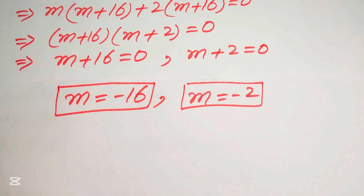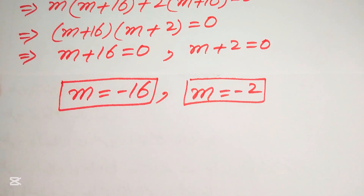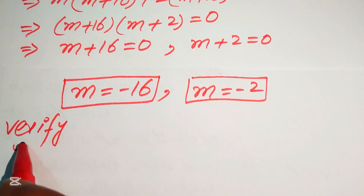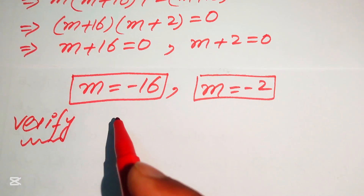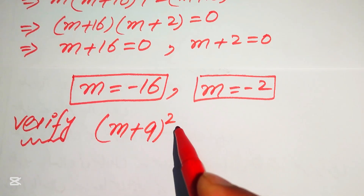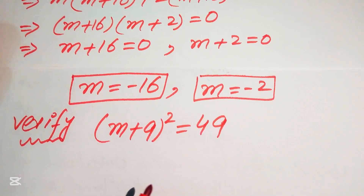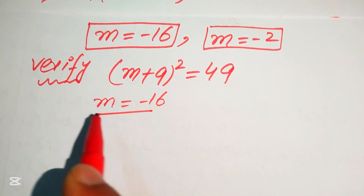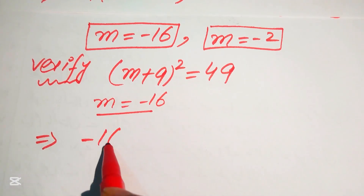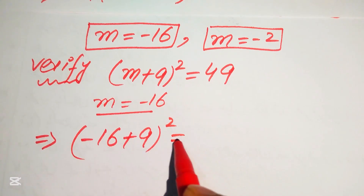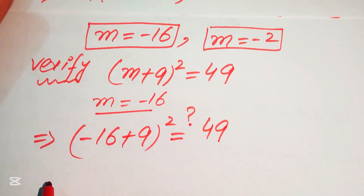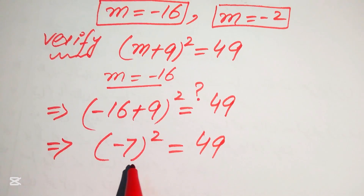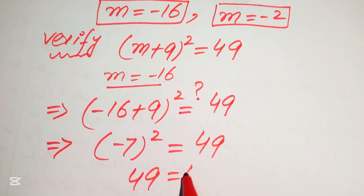Please comment which method you liked, or share any other method in the comment section. Now we verify these results. Copying the original equation: (m + 9)² = 49. For m = −16: (−16 + 9)² = (−7)² = 49 = 49. ✓